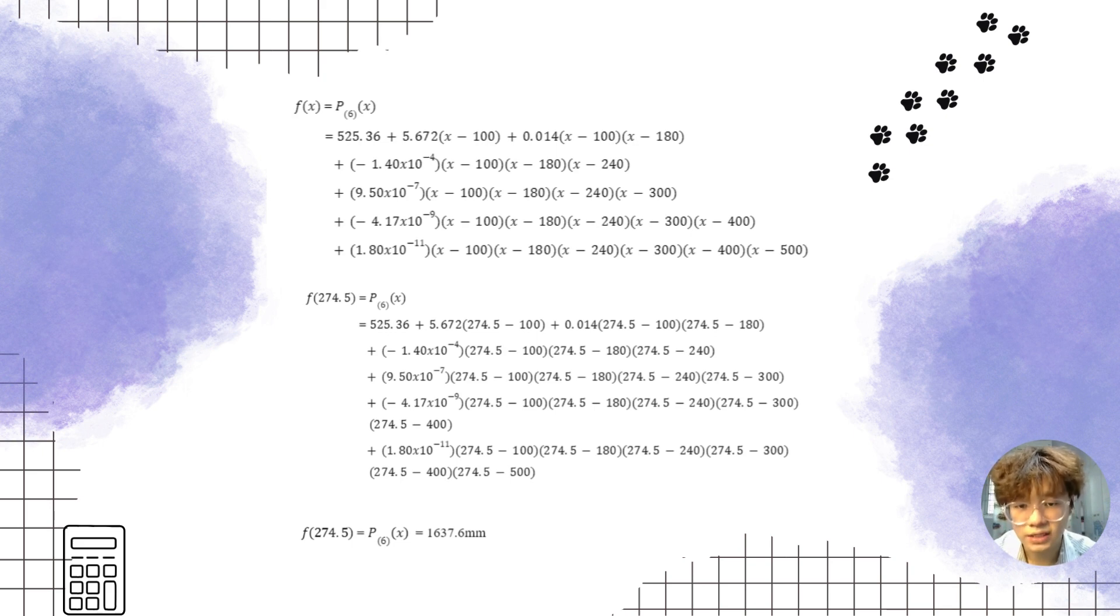...plus negative 4.17 times 10 power of negative 9(x-100)(x-180)(x-240)(x-300)(x-400). For the last part, plus 1.80 times 10 power of negative 11(x-100)(x-180)(x-240)(x-300)(x-400)(x-500).